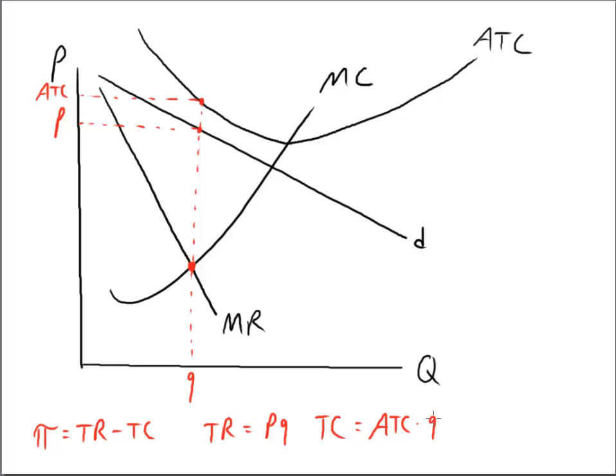The area of this rectangle is our revenue. This is price times quantity, so that's this whole rectangle.